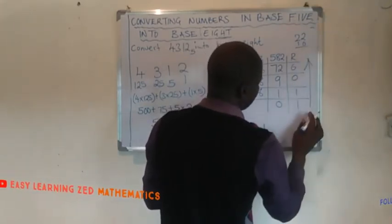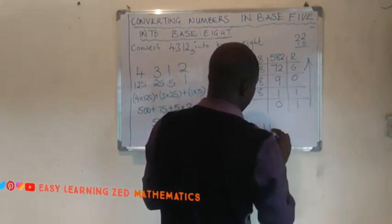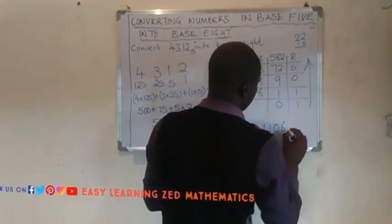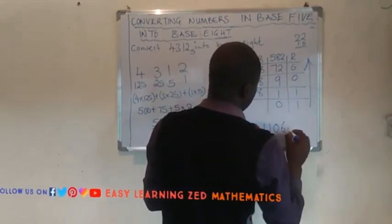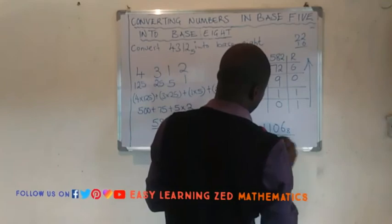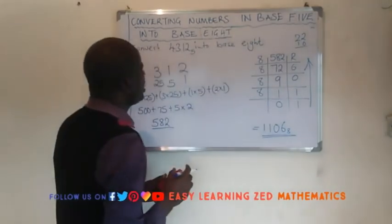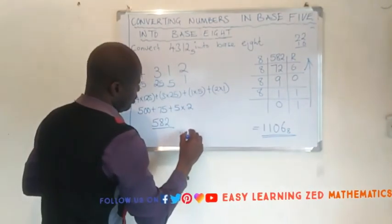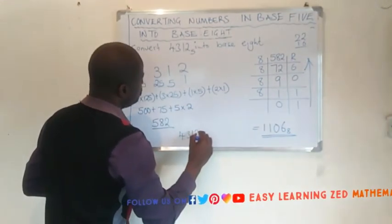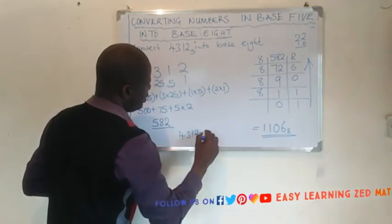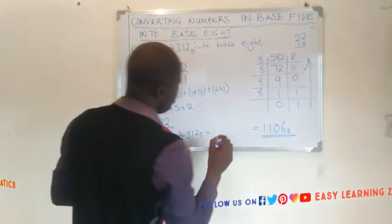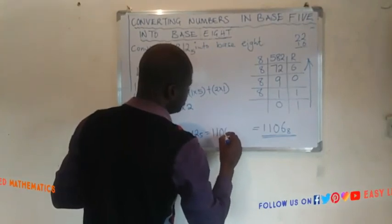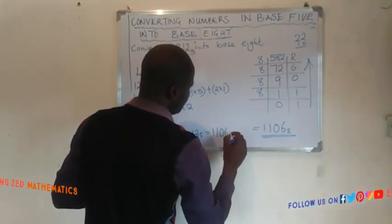Now let's write the answer starting from the bottom going upwards. Reading the remainders from bottom to top: 1, 1, 0, 6. So the answer is 1106 base 8.